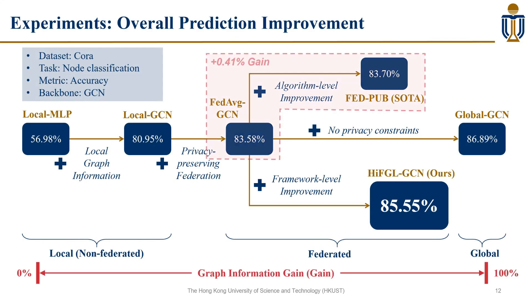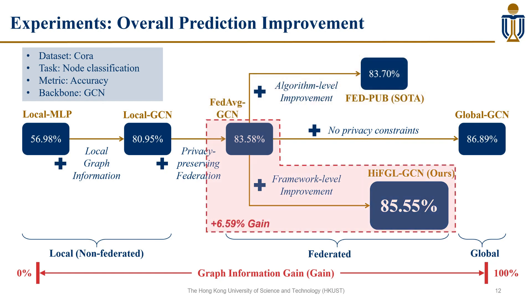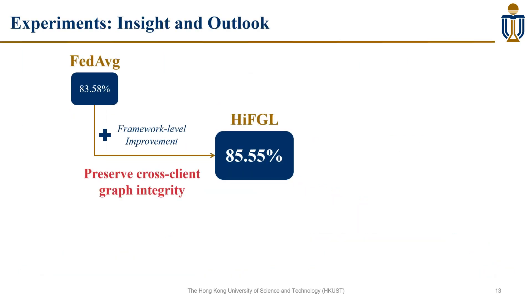For experiments, existing works resort to algorithm-level improvements, while our framework-level improvements achieve more graph information gain and are closer to the upper bound. The main reason we can get such great gain is because of the preservation of cross-client graph integrity under privacy conditions.